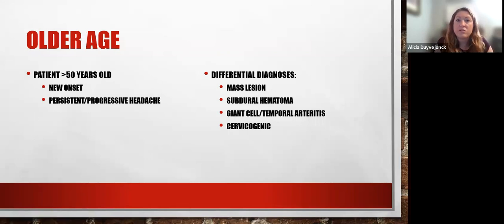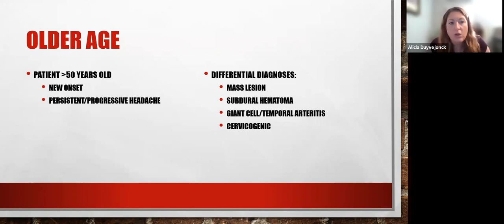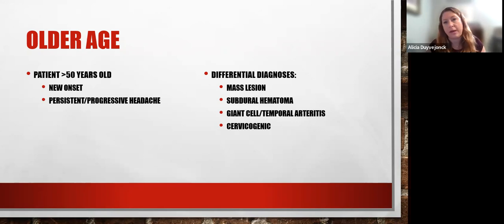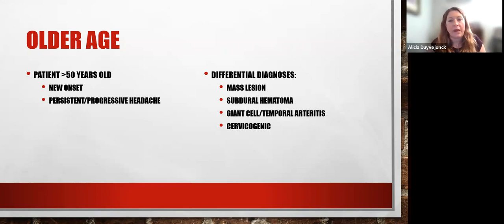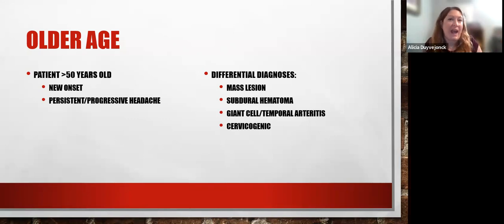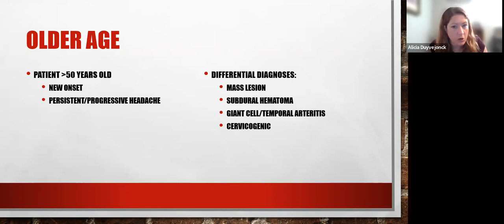Older age refers to patients over 50 with new onset, persistent, or progressive headache. A primary headache disorder should present or start before age 50. Take a careful history because patients may not volunteer their prior headache history. Differential diagnoses for this population include mass lesions, subdural hematomas, giant cell or temporal arteritis, and cervicogenic headaches, which are very common in older patients.